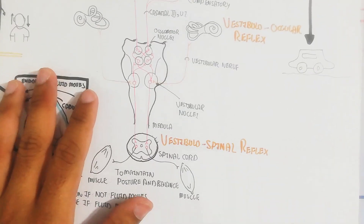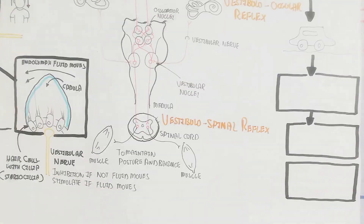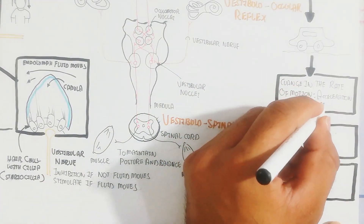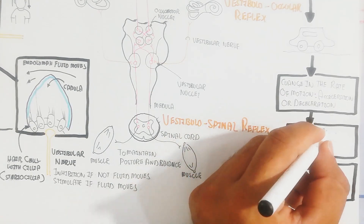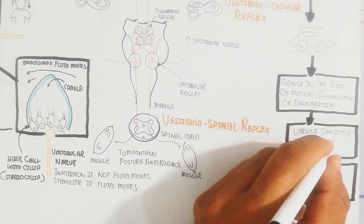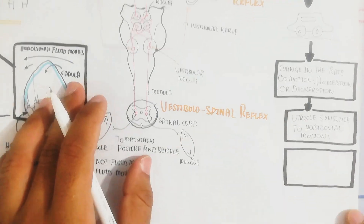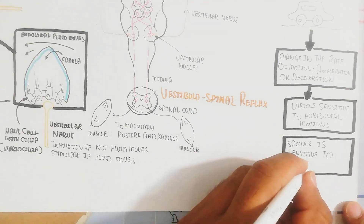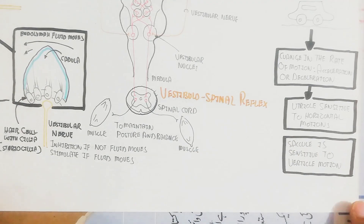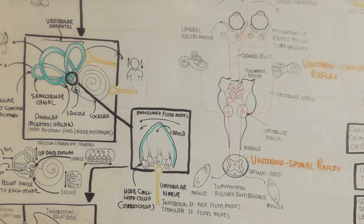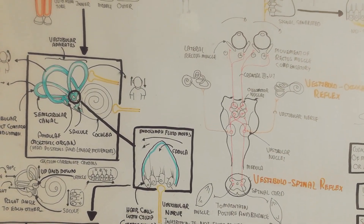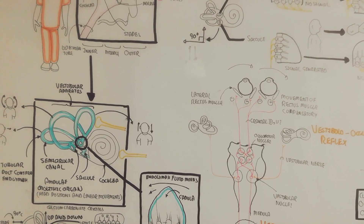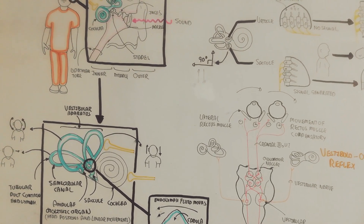Changes in the rate of motion during acceleration and deceleration are also detected. When traveling in a car, the utricle is sensitive to horizontal motion while the saccule is sensitive to vertical motion. So horizontal jerks and movements are detected by the utricle, while the saccule detects vertical movement — such as when a lift goes up or an aeroplane moves upward.